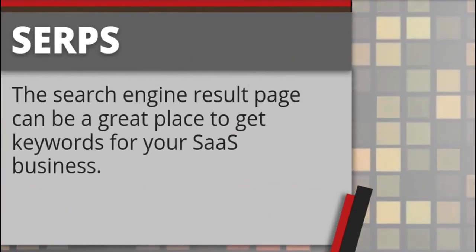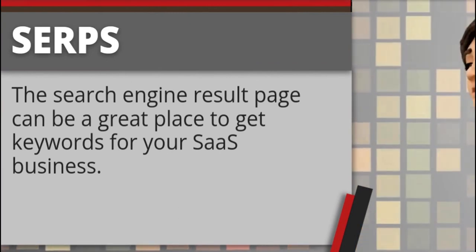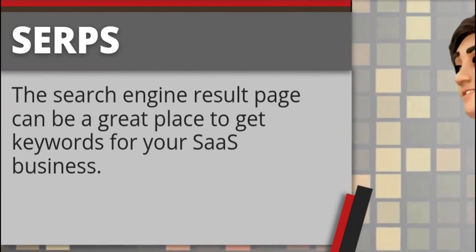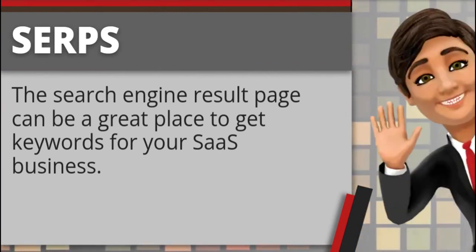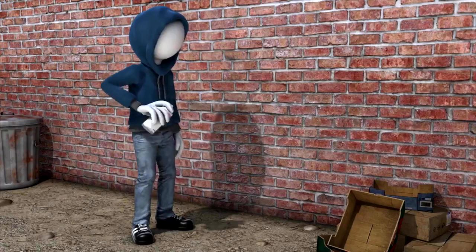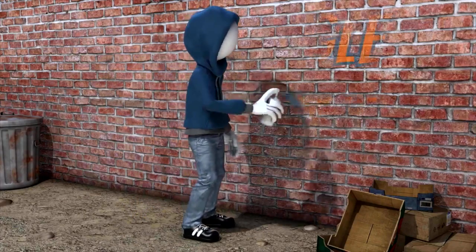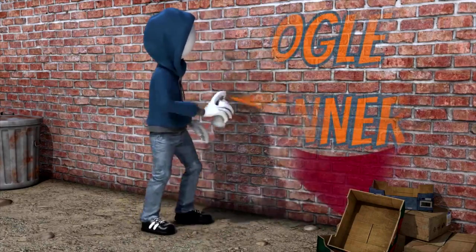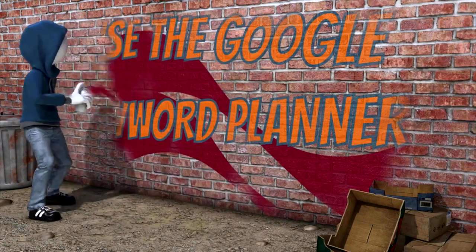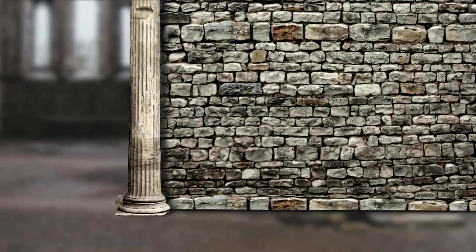The search engine results page can be a great place to get keywords for your SaaS business. Use the Google Keyword Planner — when integrated with Google Ads, it can also serve as a great place to update your semantic keyword list for SaaS.